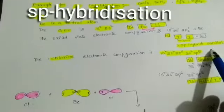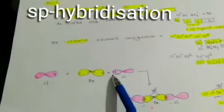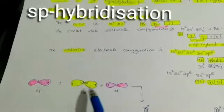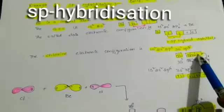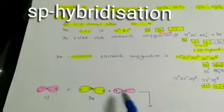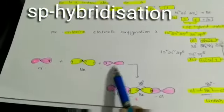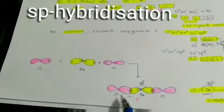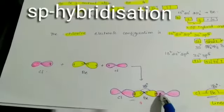The 2 electrons of the SP hybrid orbitals and the 2 electrons from the chlorine atoms combine to form the beryllium chloride molecule. Each SP hybrid orbital of beryllium has 1 unpaired electron, and each chlorine atom also has 1 unpaired electron. These pair up to form new orbitals, giving beryllium chloride a linear shape with a bond angle of 180 degrees.